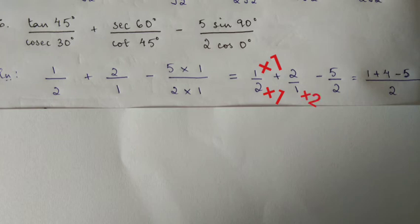For 1 by 2, multiply by 1 to get 1. For the middle term with LCM 2, multiply 2 by 2 to get 4. For the third term, multiply 5 by 1 to get minus 5.